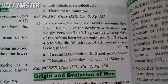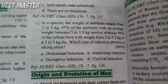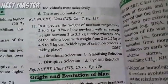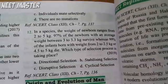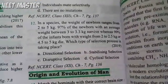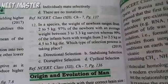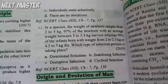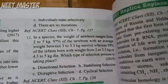Infants born with weight from 2 to 2.5 kg or 4.5 to 5 kg die. Which type of selection process is taking place? Options: directional, stabilizing, disruptive, or cyclical?